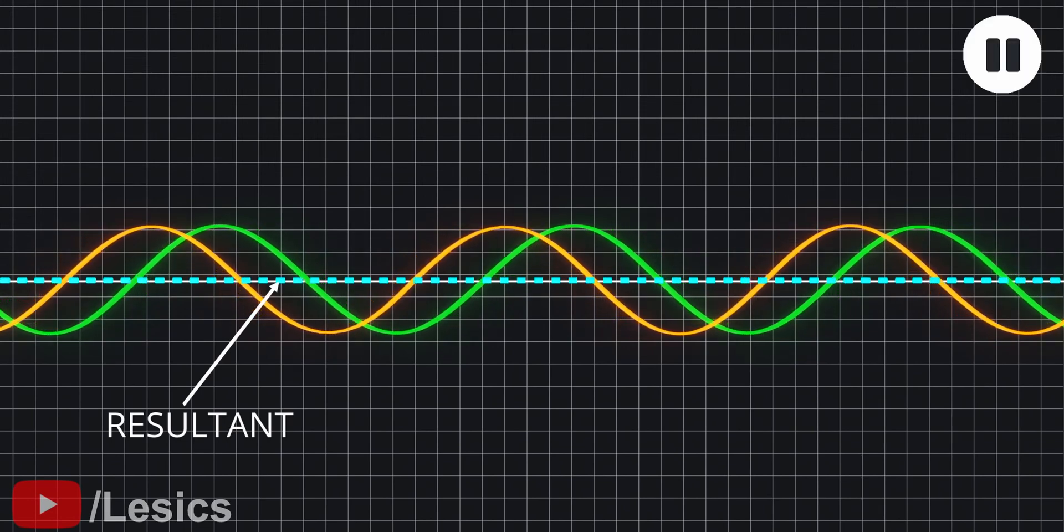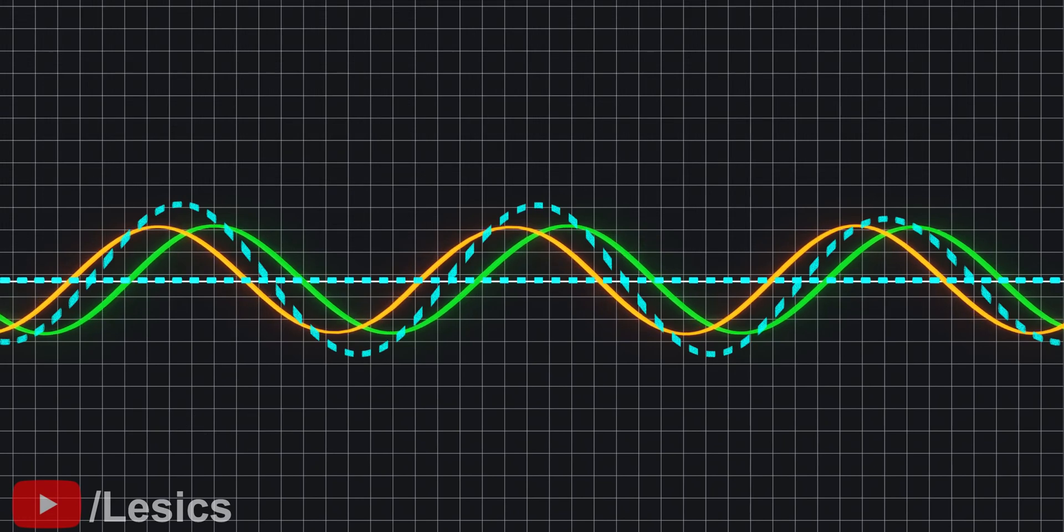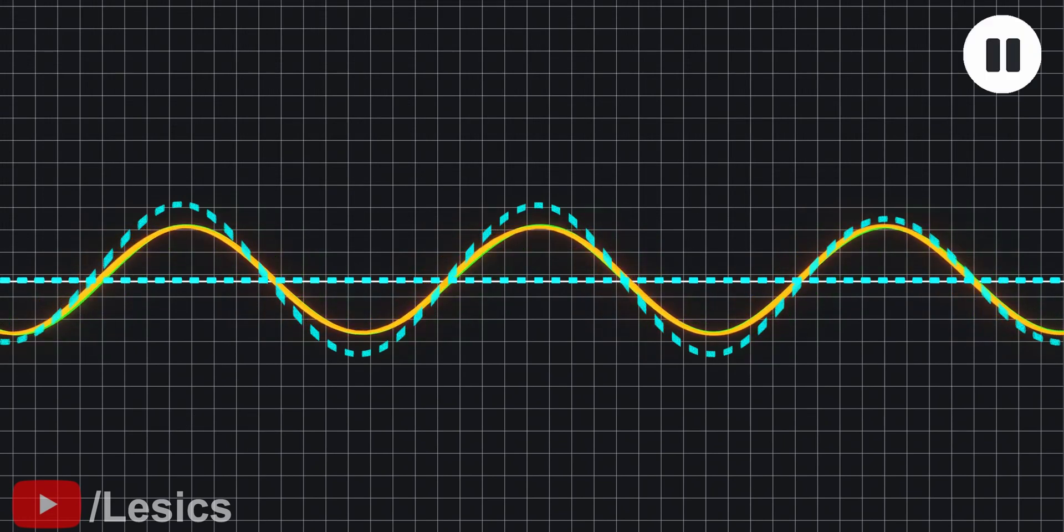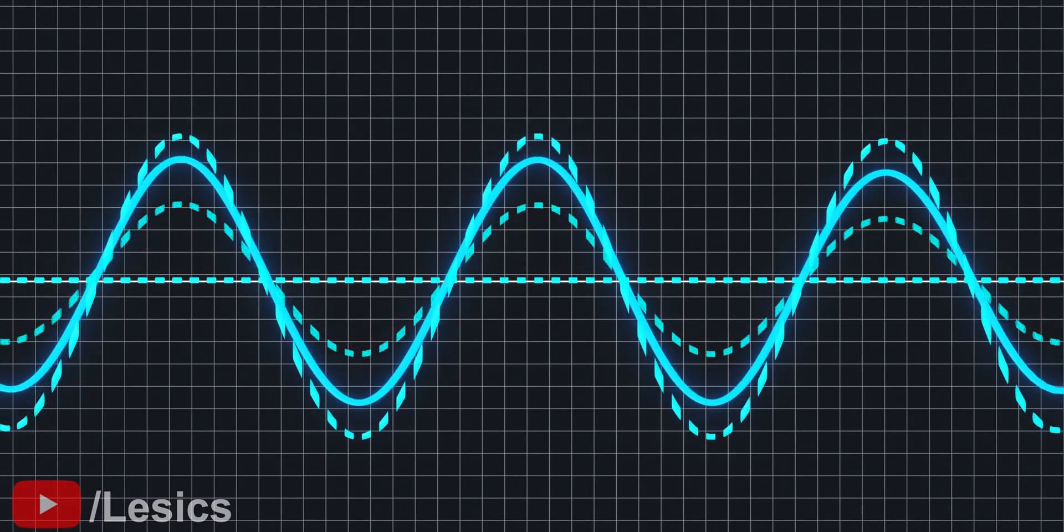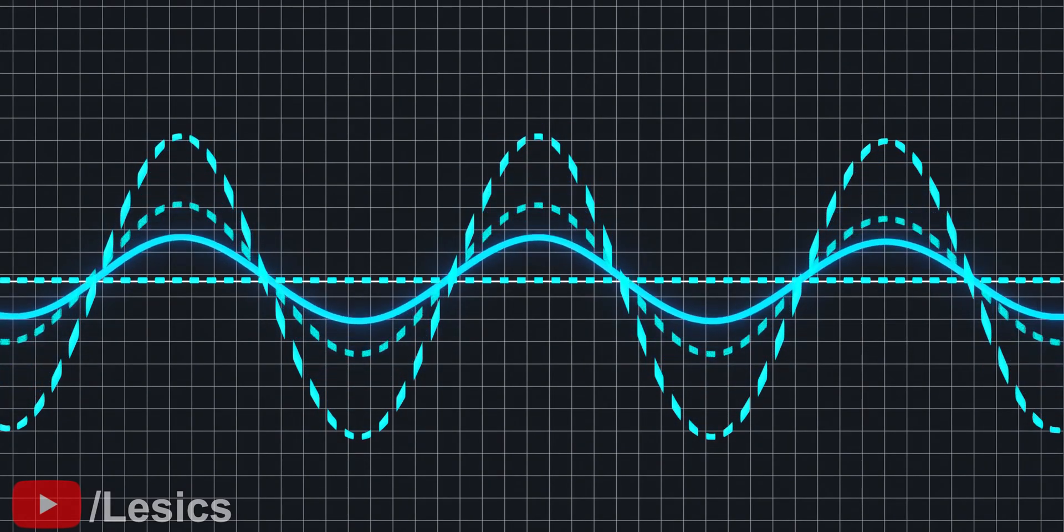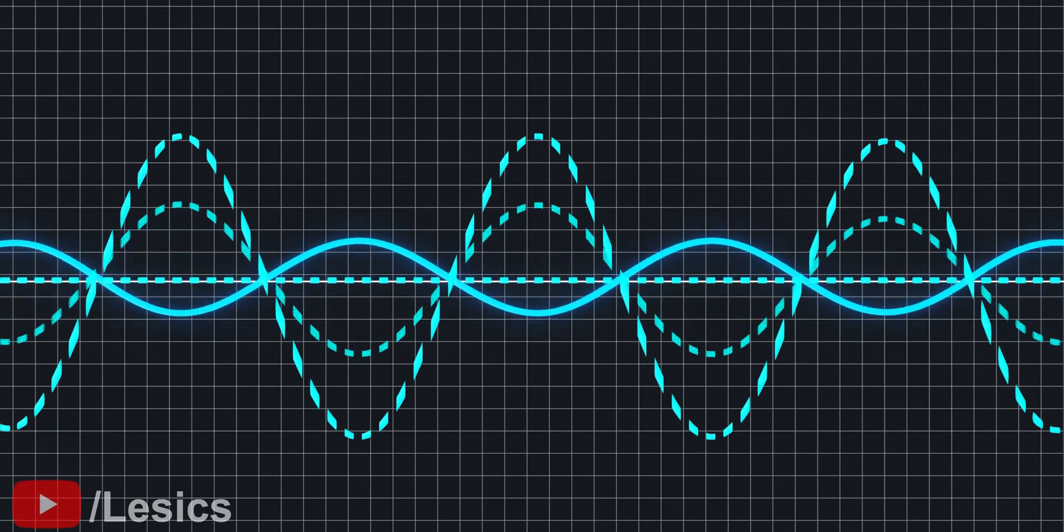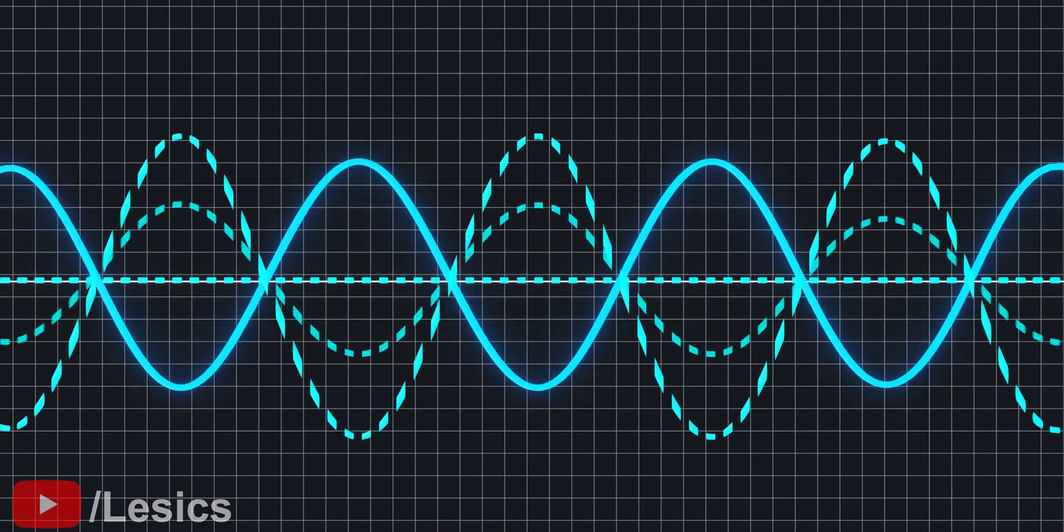Now let's pause at this instant. The resultant is a bigger sinusoidal curve. Let's pause at one more instance. Here you are getting an even bigger sinusoidal wave as the output. By comparing the results of these three instances, it is clear that the resultant electromagnetic wave just oscillates in its position without traveling.